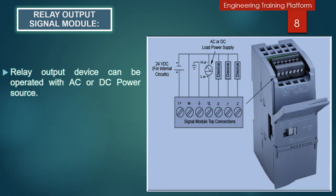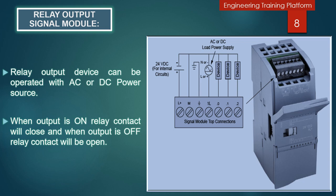Relay output signal modules offer the advantage of being able to work with either AC or DC devices, as long as the devices operate within the module's specifications and the switching speed required is not too fast. As shown in the picture, there is a set of relay contacts with eight relay output signal modules — three relay contacts above and five relay contacts below. When the output is on, the contact will close; when the output is off, the relay contact will be open.